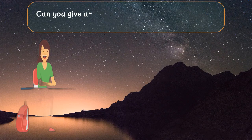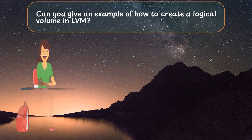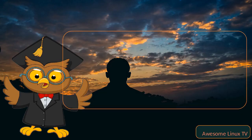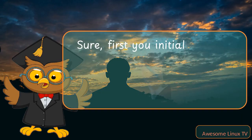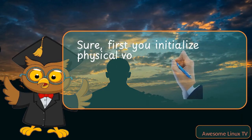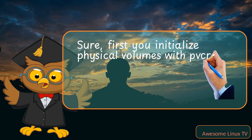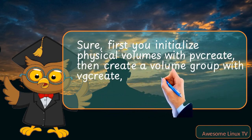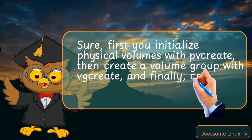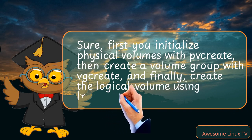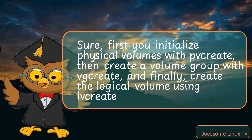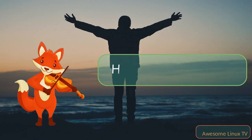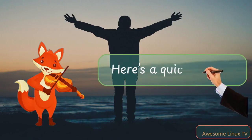Can you give an example of how to create a logical volume in LVM? Sure, first you initialize physical volumes with pvcreate, then create a volume group with vgcreate, and finally create the logical volume using lvcreate. Here's a quick example.